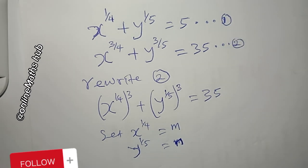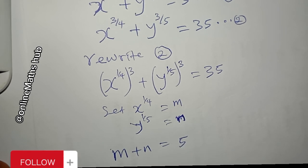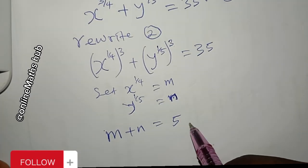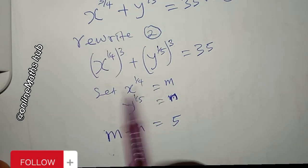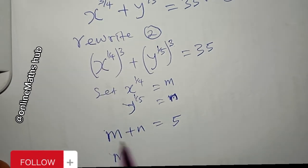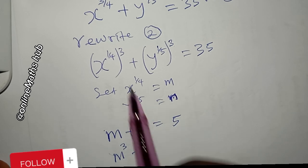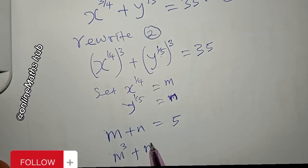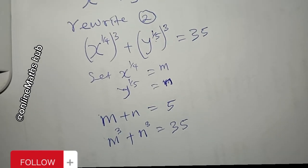With that substitution, equation 1 now becomes m + n = 5, and equation 2 now becomes m³ + n³ = 35.